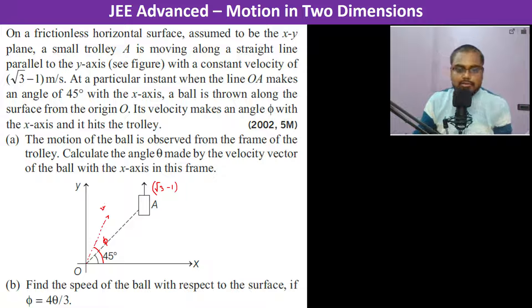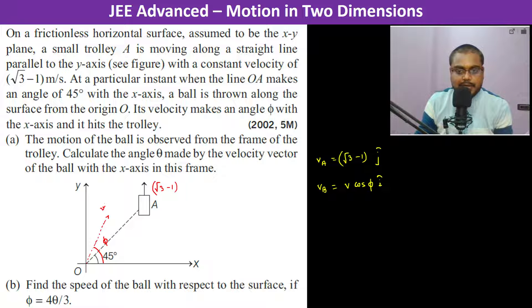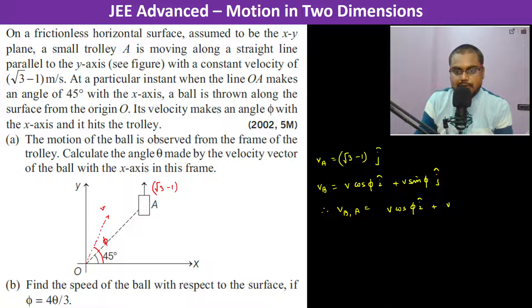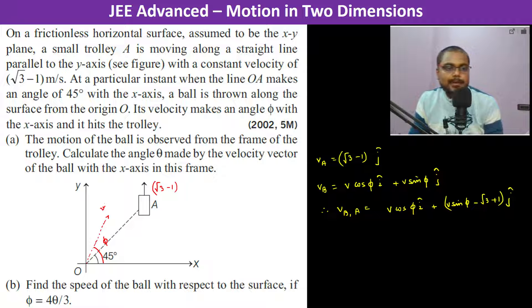We can write that the velocity of A is (√3 − 1)ĵ. The velocity of the ball is v·cosφ·î + v·sinφ·ĵ. Therefore, the velocity of the ball with respect to A is v·cosφ·î + (v·sinφ − (√3 − 1))ĵ.